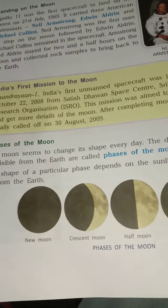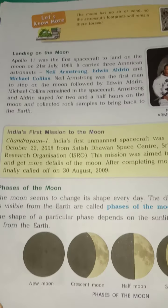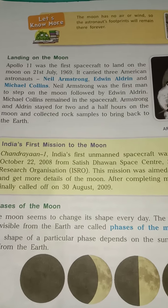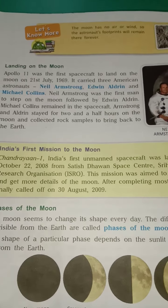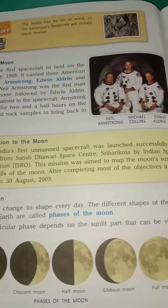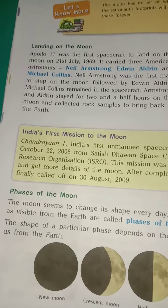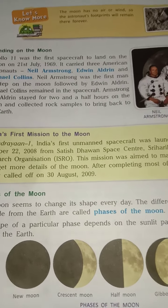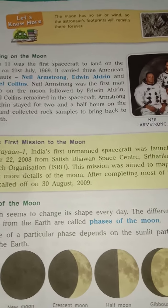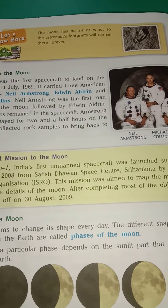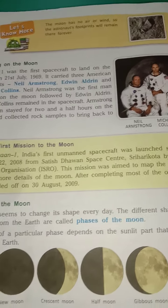The Moon seems to change its shape every day. We all know we can see different shapes of the Moon. The different shapes of the Moon visible from the Earth are called phases of the Moon.